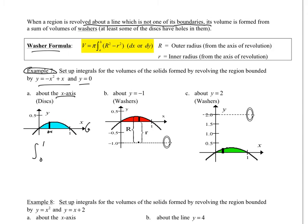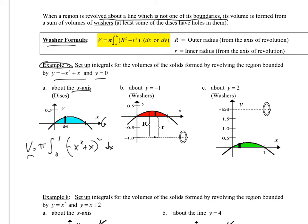And my x's are just going to be the negative x squared plus x. I have to square that because I have the pi r squared, and then that would be dx. And that's my volume.